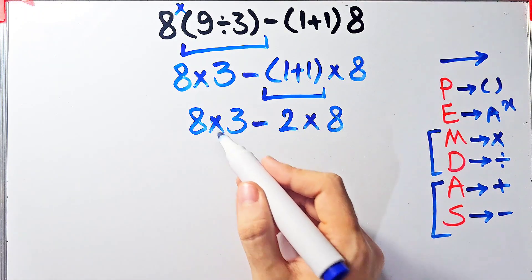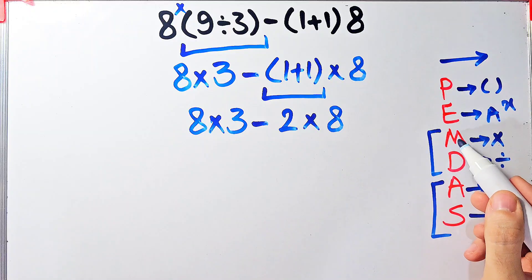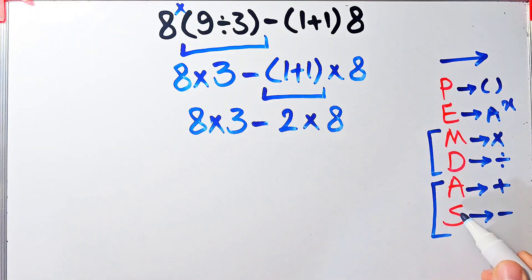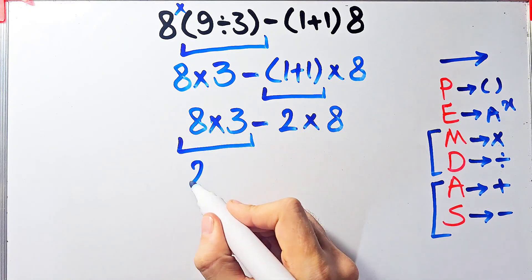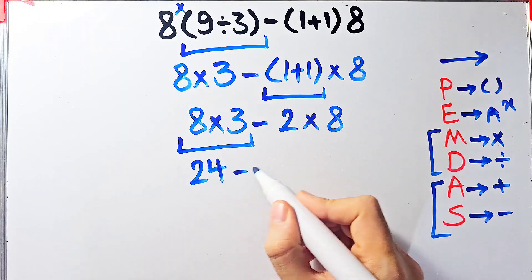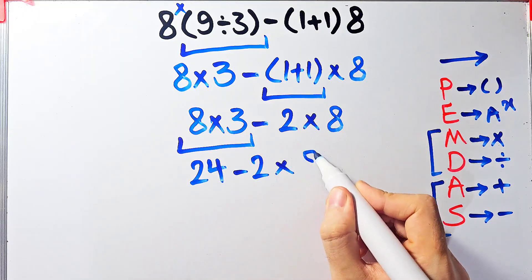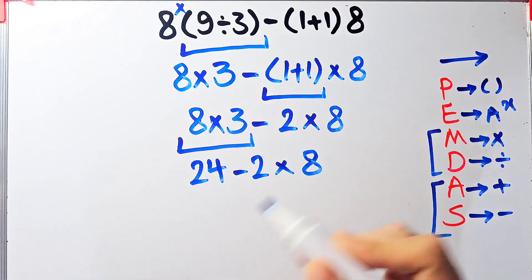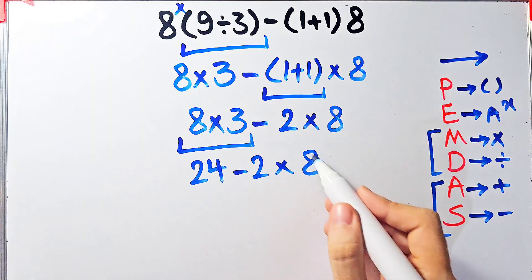8 times 3 equals 24. Now we have 24 minus 2 times 8. Again we have subtraction and multiplication — first we do this multiplication because multiplication has higher priority than subtraction.